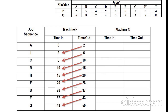Now we create a table to find the total elapsed time. The job sequence is the optimal job sequence found previously. For machine P, the in-time for task A is initially 0 and the out-time is 2, since the processing time for task A on machine P is 2 hours. For task A on machine Q, the working time is 4 hours. The in-time is 2 and out-time is 2 plus 4 = 6.